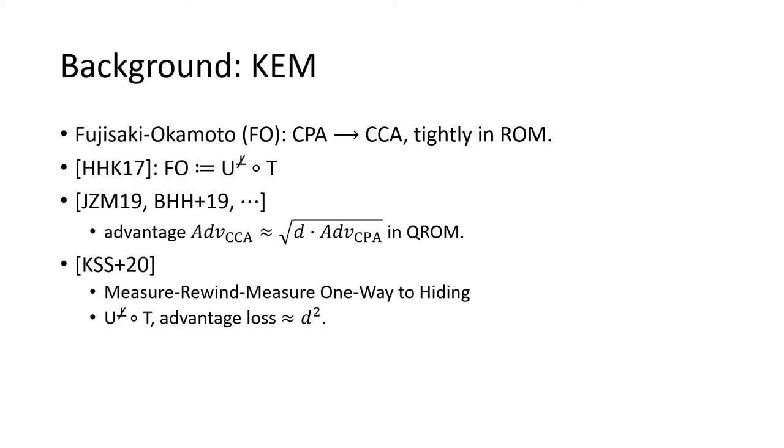In 2017, Hofheinz and others decomposed the FO into two transformations named U and T. They analyzed them and their variants in the ROM and QROM.